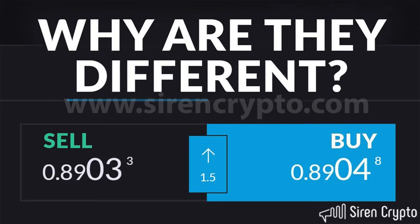Now this is something that can be quite confusing for new traders, but there's no need to be. All markets have two prices — there's a price you buy at and a price you sell at. The spread, depending on the market, isn't necessarily set; it can vary throughout the day. So first of all let's deal with the basics and look at some example spreads and where we would be buying and where we would be selling.